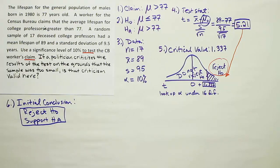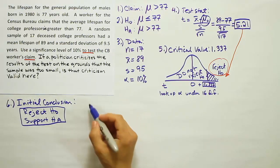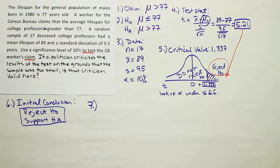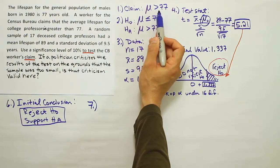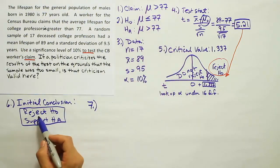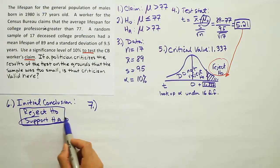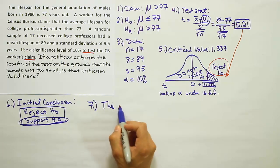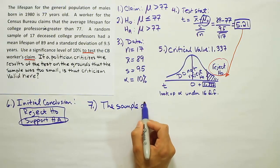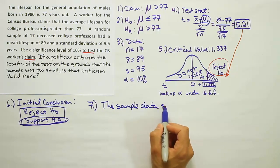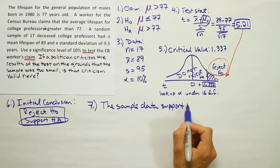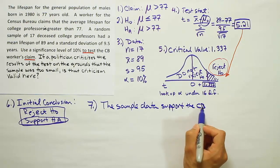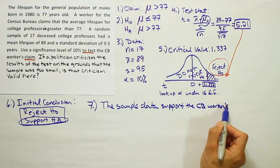Now we want to go back to our original claim to get the wording of our final step to the problem. The final step, step 7, requires us to word the conclusion. We're going to look at the claim and ask yourself what hypothesis was the claim. In this case, it was HA. So we should use the wording that's attached to HA, which says that we support. So we're going to write the sample data support the claim.